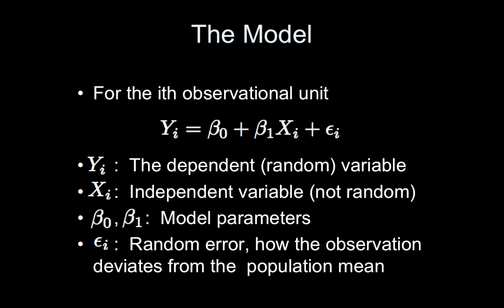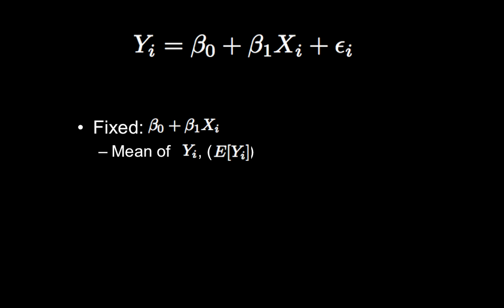So epsilon is the random error and it describes how the observation deviates from the population mean. So how our subjects' reaction time deviates from the population's reaction time. The first portion of this equation is referred to as the fixed part, the beta naught plus beta 1 xi, because it describes the mean or expected value of Yi.